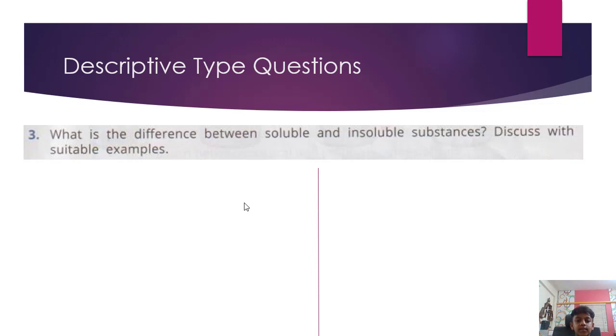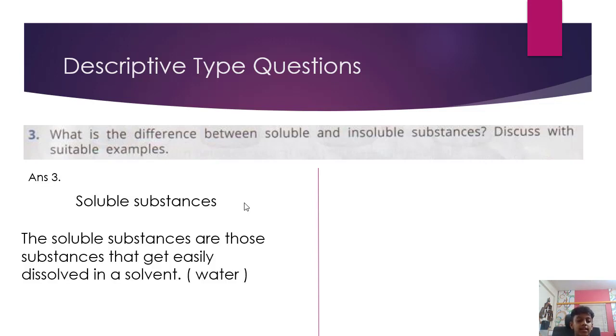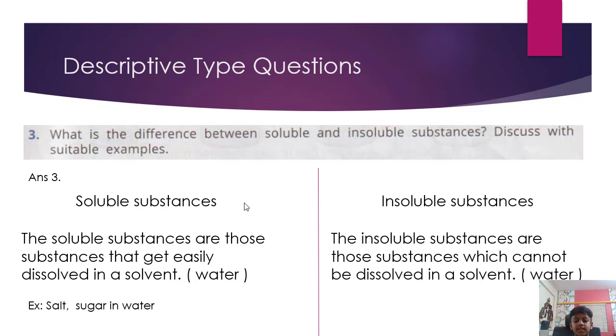What is the difference between soluble and insoluble substances? Discuss with suitable examples. Answer. Soluble substances are those substances that get easily dissolved in a solvent like water. Example: solid sugar in water. Insoluble substances are those substances which cannot be dissolved in a solvent like water. Example: sand, oil in water.